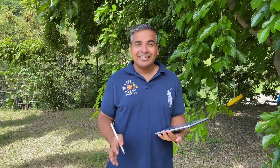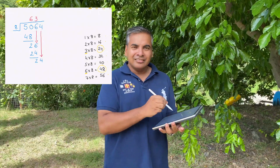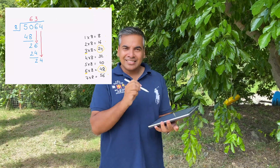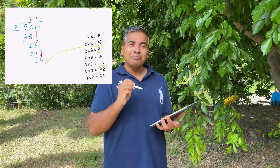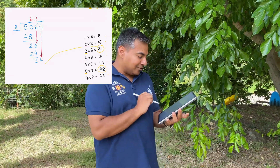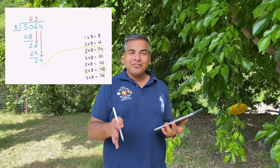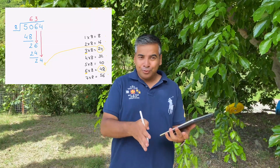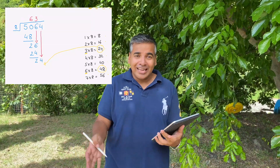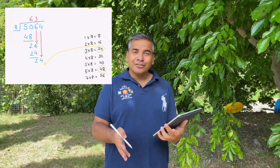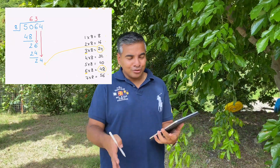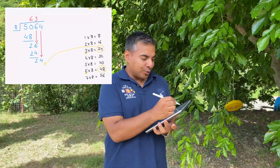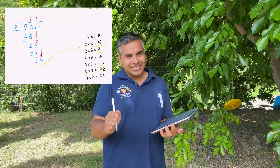Step eight starts the cycle again: we go back to step two and look at the number twenty-four to see if there is any match in the multiples table. We find that three times eight equals twenty-four — a perfect match. So we write three on top of the line next to the sixty-three.